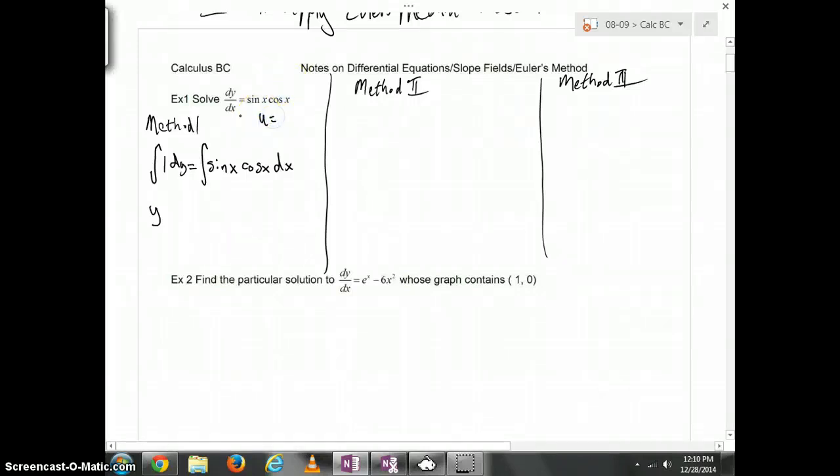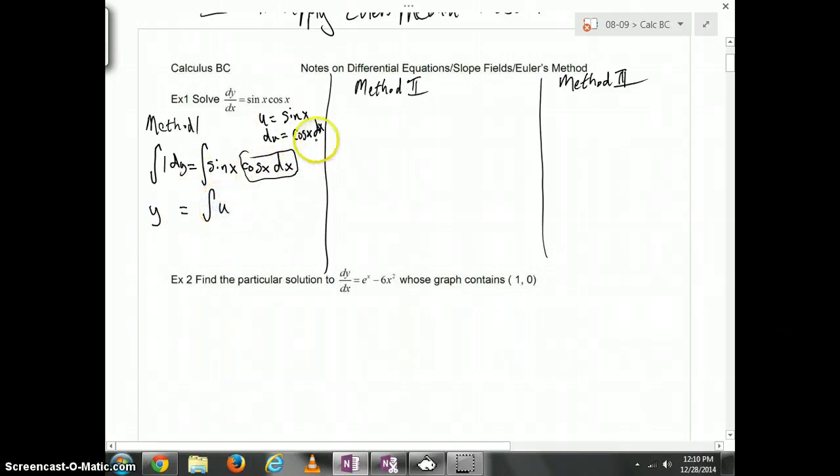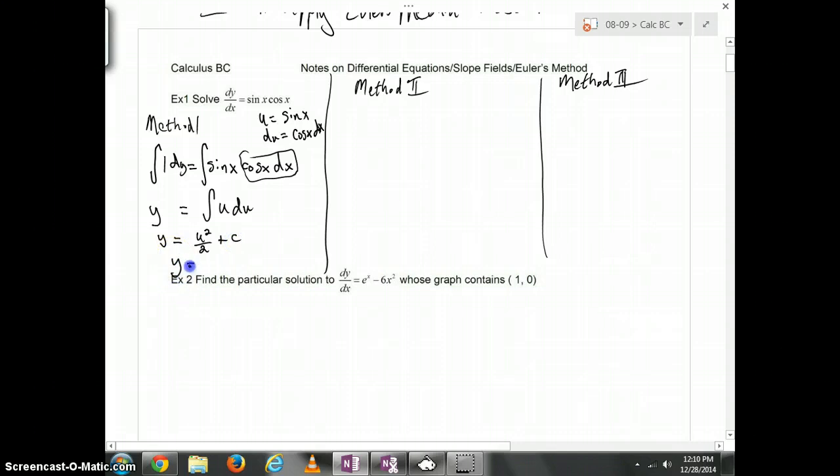The left side is pretty simple. You integrate a 1 with respect to Y, and you get just a Y. On the right, we have the integral of sine of X times the cosine of X DX. Let's try a U substitution. It might be helpful to let U be sine of X. Because if that were the case, then DU would be the derivative of sine, which is the cosine of X. You can see cosine of X DX right here as well.